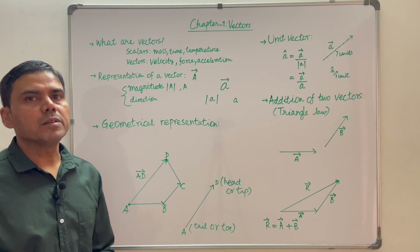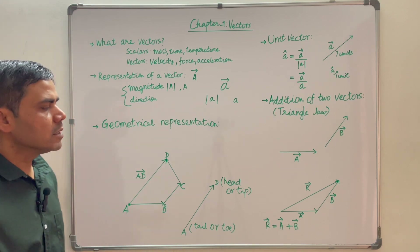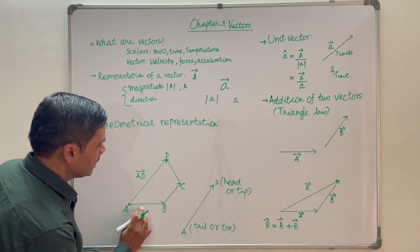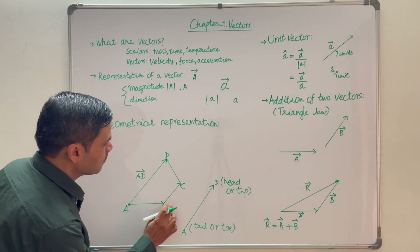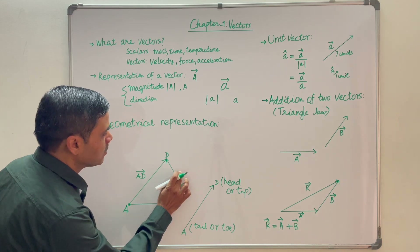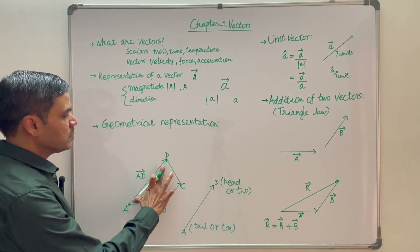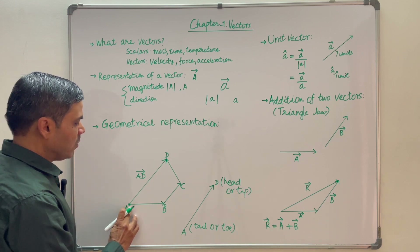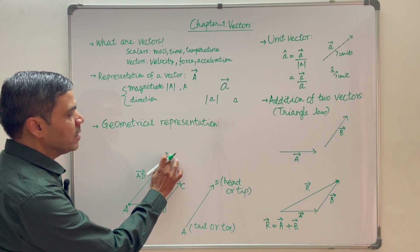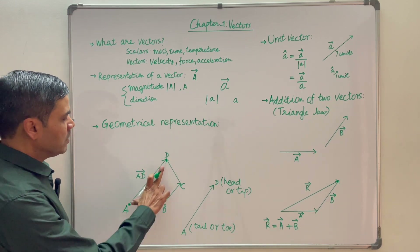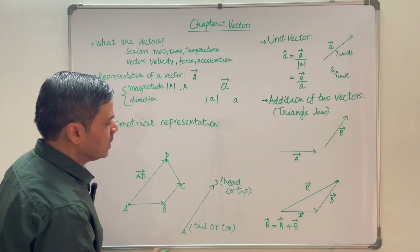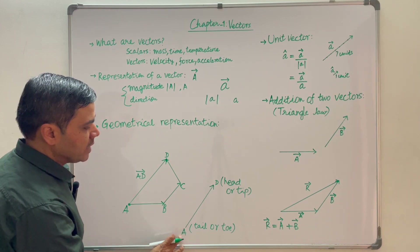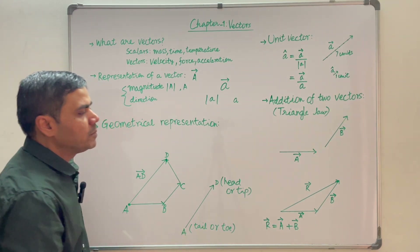Let us talk about the geometrical representation of vectors. Suppose an object has started from point A. From point A it is moving to point B, from B to C, and finally from C to D. So its displacement vector will be represented by AD, where A was the starting point and D was the final point. I have represented vector AD here. Point D is called the head or tip, and point A is called the tail or toe of the vector.